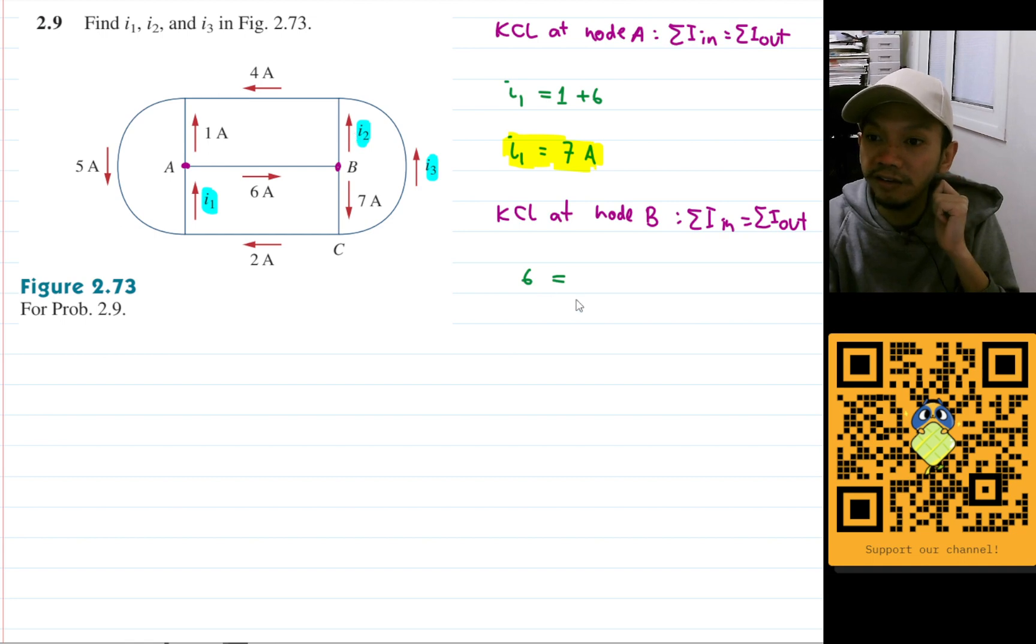And this current here will be i2 and this current here will be 7. So that means that i2 will be 6 minus 7, or i2 will be minus 1 ampere. That is the value of i2.